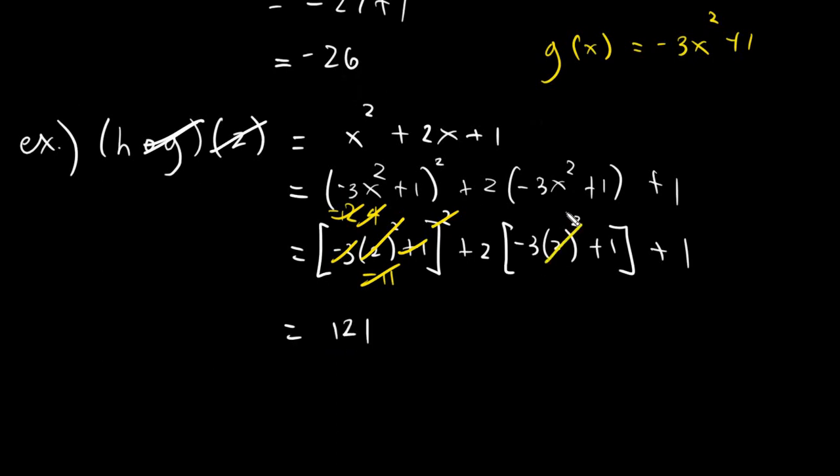Next, let's proceed. 2 squared is 4, 4 times negative 3, the answer is negative 12. Negative 12 plus 1 is negative 11. And negative 11 times 2, the answer is just simply plus negative 22. And then we have plus 1. 121 plus negative 22 plus 1, the answer is just simply a plain 100.